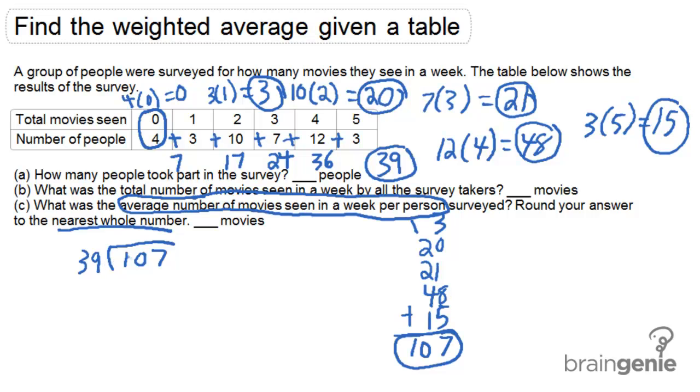Okay, so 39 goes no times into 10. It goes two times into 107. If we subtract 78 from 107, we're going to get 29. And then we need to expand using decimals. So if we bring down the zero, how many times does 39 go into 290? Turns out seven times. Seven times nine is 63. Seven times three is 21, plus six is 27. We actually don't even need to go any further, because 2.7 is going to round up to three movies.